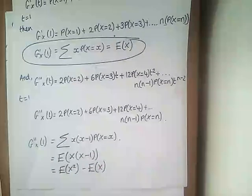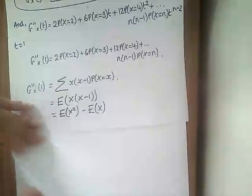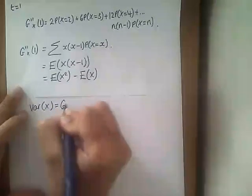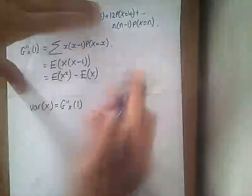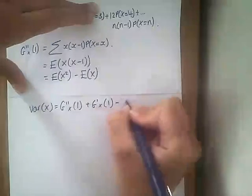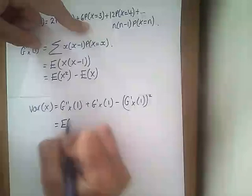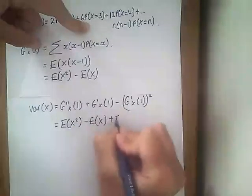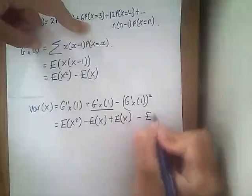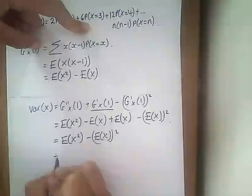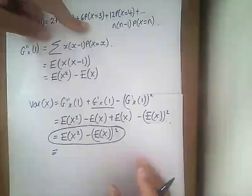Substituting t=1 into g''_X(t) gives us the sum of x(x−1)·P(X=x), which equals E[X(X−1)] = E(X²) − E(X). Then our variance is: Var(X) = g''_X(1) + g'_X(1) − [g'_X(1)]². Substituting in terms of expectations gives E(X²) − [E(X)]², which we know is the variance. We have just proved it.